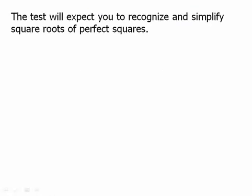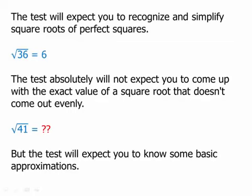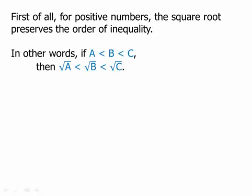The test will expect you to recognize and simplify square roots of perfect squares — for example, radical 36 equals 6. The test will not expect you to compute the exact value of a square root that doesn't come out evenly, like the exact value of the square root of 41. But the test will expect you to know some basic approximations. For all positive numbers, the square root preserves the order of inequality: if a is less than b is less than c, then square root of a is less than square root of b is less than square root of c.